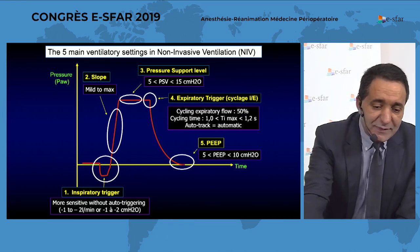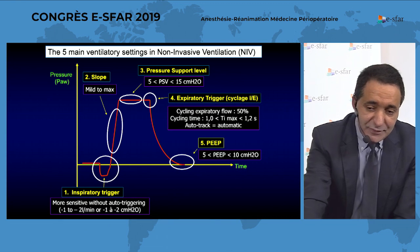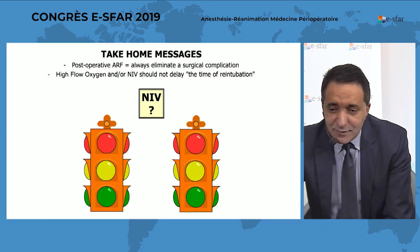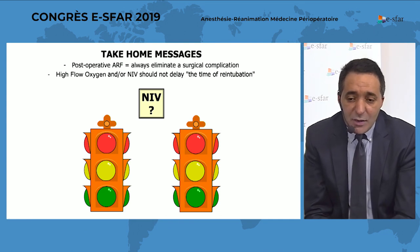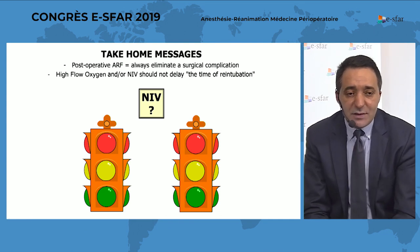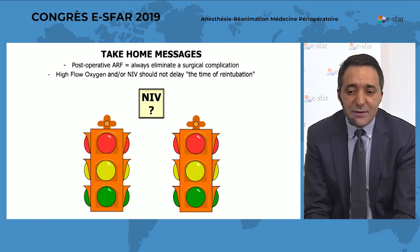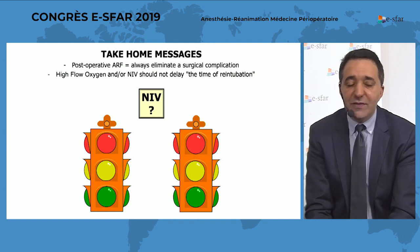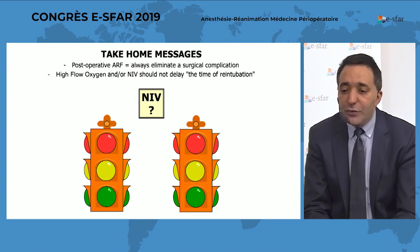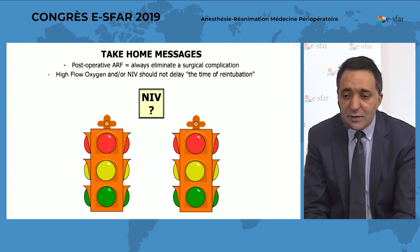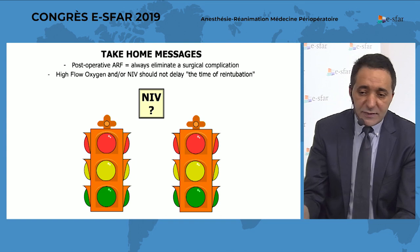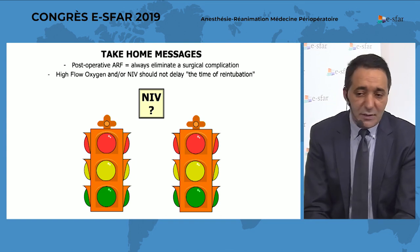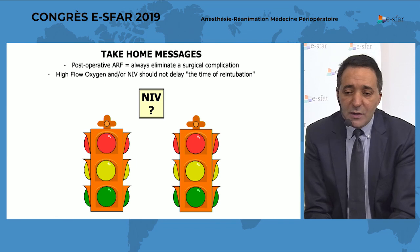This is the take-home message. Two main messages. Always in the post-operative period, if you have a patient with acute respiratory failure, you should always eliminate a surgical complication first — this is the first cause of post-operative acute respiratory failure. After eliminating a surgical complication, you should consider pulmonary embolism and other cardiac problems.